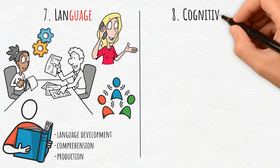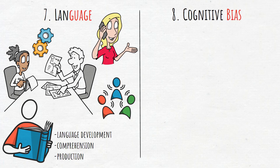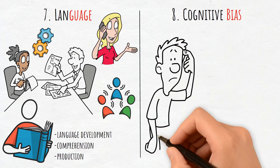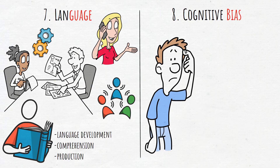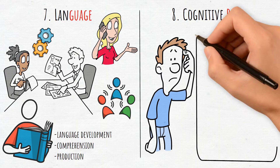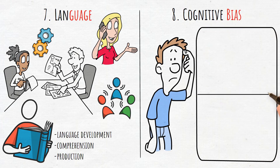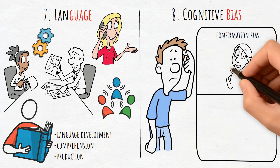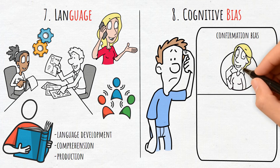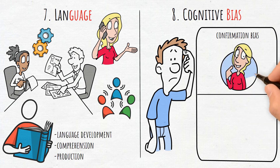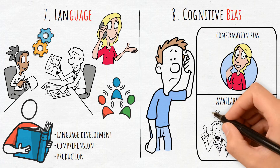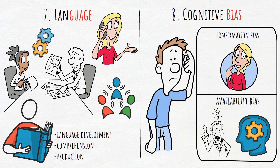8. Cognitive Bias. Cognitive biases are systematic errors in thinking that affect decision-making and judgments. Common examples include confirmation bias, where people favor information that confirms their pre-existing beliefs, and availability bias, where decisions are influenced by recent or vivid events.